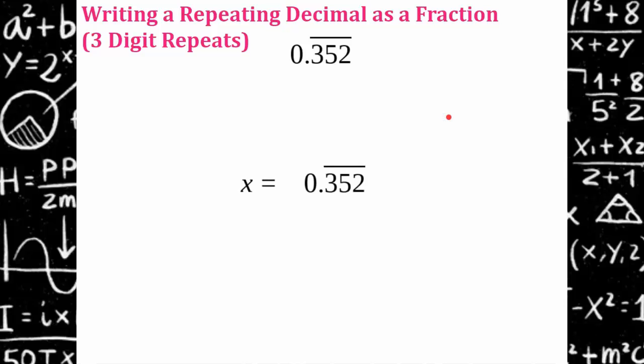So I let x equal 0.352 repeating. I multiply both sides of my equation by 1,000 because three digits repeat. Tenths, hundredths, thousandths. So whatever digit you get to, you multiply by that. This is 352 thousandths. Multiply both sides by thousands.